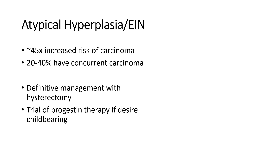Atypical hyperplasia or EIN is associated with a greatly increased risk of carcinoma. In fact, about 20% to 40% of these patients will have concurrent adenocarcinoma, which will be found on subsequent hysterectomy. Most of these patients do go on to get a hysterectomy. Although in some cases, if a patient is young and still desires childbearing, progestins can be tried, and sometimes these will resolve with progestin therapy.